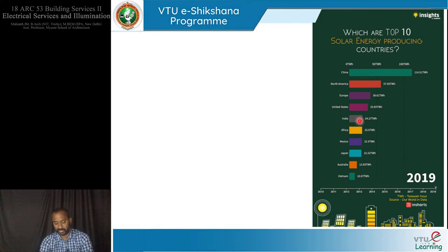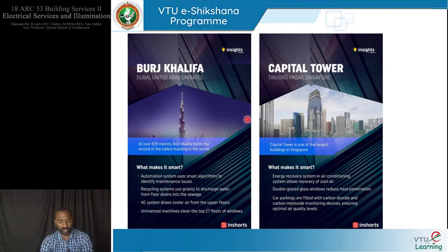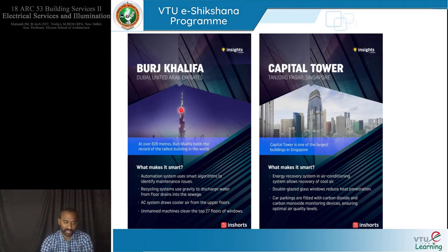Some examples of intelligent buildings approaching net zero ideals: the Burj Khalifa at 828 meters — the world's tallest building — uses smart algorithms to identify maintenance issues, recycling systems using gravity to discharge water from floor drains, AC systems that draw cooler air from upper floors using ambient air, and unmanned machines that clean the top 27 floors of windows automatically.